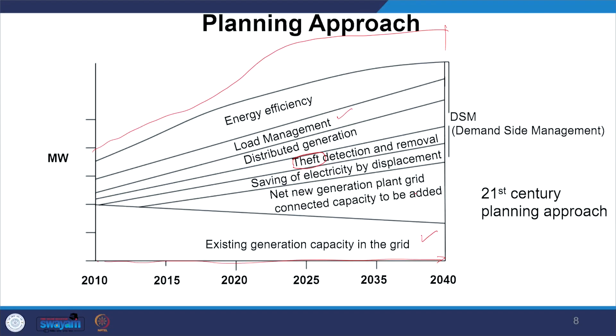Finally, net new generation plant grid-connected capacity can be added, so that over the next 10 to 20 years you are well prepared. One important concept here is demand side management (DSM), which allows you to delay your investment. Instead of putting a new power plant immediately as load increases, you can do load management — displacing activity from peak load hours to off-peak hours — thereby deferring the installation of new generation capacity.